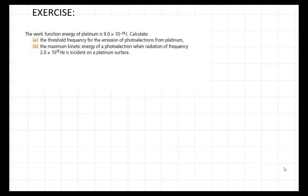Let's finish with an exercise. The work function of platinum is 9 times 10 to the power of negative 19 joules. Question A: calculate the threshold frequency for the emission of photoelectrons from platinum.